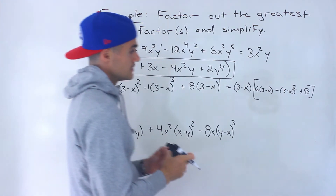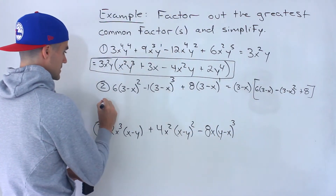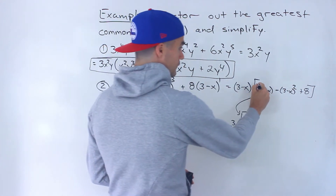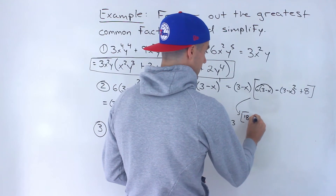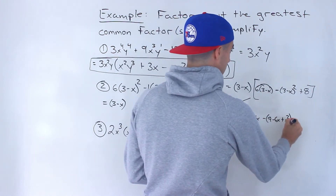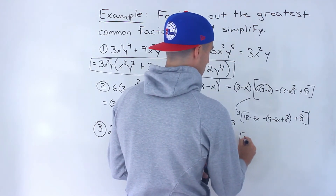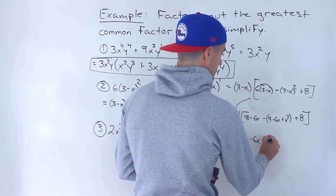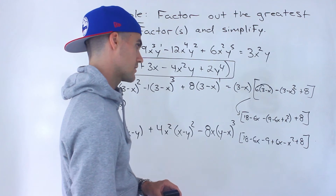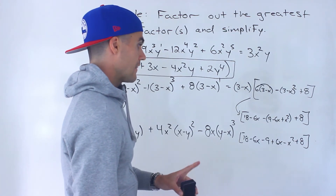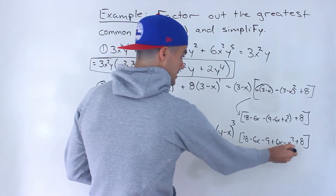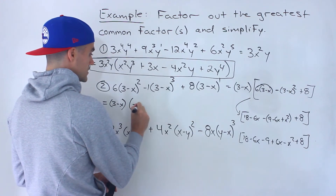From here, we want to simplify the square bracket. The (3−x) factor stays out front. Inside the bracket, distribute the 6 to get 18−6x, then subtract (3−x)² which FOILs to 9−6x+x², and then add 8. So we have 18−6x, then distribute the negative inside: −9+6x−x², plus 8.